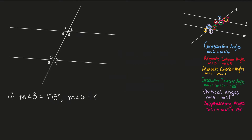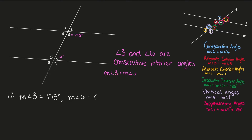If the measure of angle 3 is equal to 175 degrees, then what is the measure of angle 6? Well, angle 3 and angle 6 would be consecutive interior angles. This means the measure of angle 3 plus the measure of angle 6 is equal to 180 degrees. So angle 6 is going to be equal to 180 minus 175, and the measure of angle 6 would equal 5 degrees.